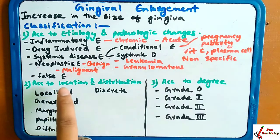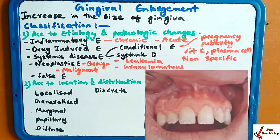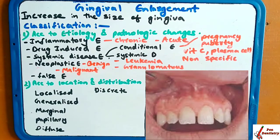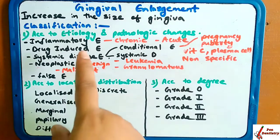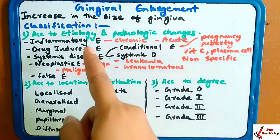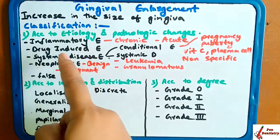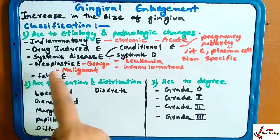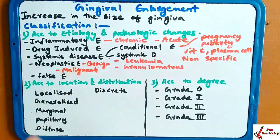The last type is false enlargement. In false enlargement, there is no underlying disease causing it — there is just a gingival enlargement. So according to etiology and pathology, the types are: inflammatory, drug-induced, systemic, neoplastic, and false.